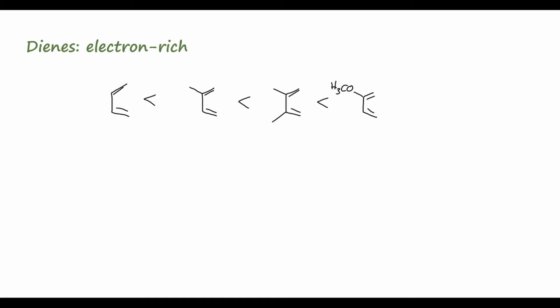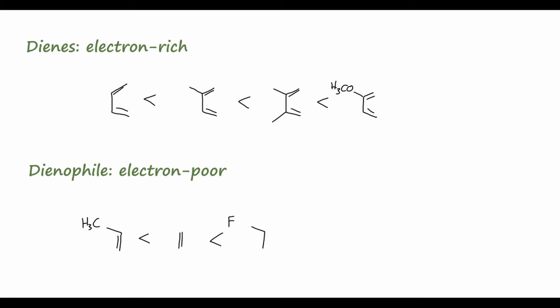On the other hand, the other compound — called the dienophile, meaning diene-loving — which is oftentimes an alkene but can also be an alkyne, needs to be relatively electron-poor. So propylene with a methyl group is less reactive than regular ethylene because methyl groups are electron-donating. Ethylene with a trifluoromethyl group is more reactive because those fluorines withdraw electron density by induction, and the cyano group is an even more electron-withdrawing substituent. The dicyano variant of ethylene is the most reactive dienophile of those examples.